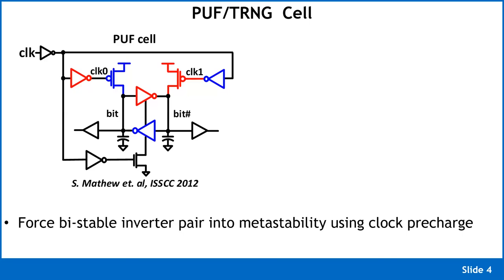We use a pair of pre-charge transistors clocked with the input clock. When the clock goes low, both clock-zero and clock-one are low, so the pre-charge transistors turn on and both bit and bit-bar are driven to VCC. There is also a footer device to cut off shoot-through current, ensuring bit and bit-bar reach VCC properly.